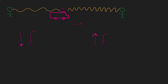If that's what happens to frequency, what happens to wavelength? Wavelength is the inverse of frequency. The formula is: speed equals frequency times wavelength (c = fλ). That means as frequency increases, wavelength decreases, and vice versa. So in the case of the compressed wave in front, wavelength decreases; and for the stretched wave behind, wavelength increases.